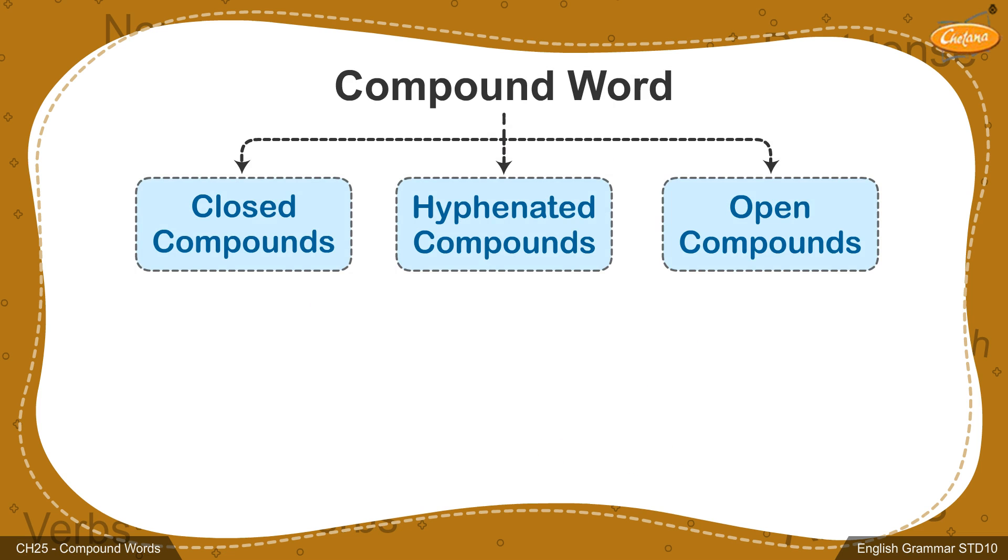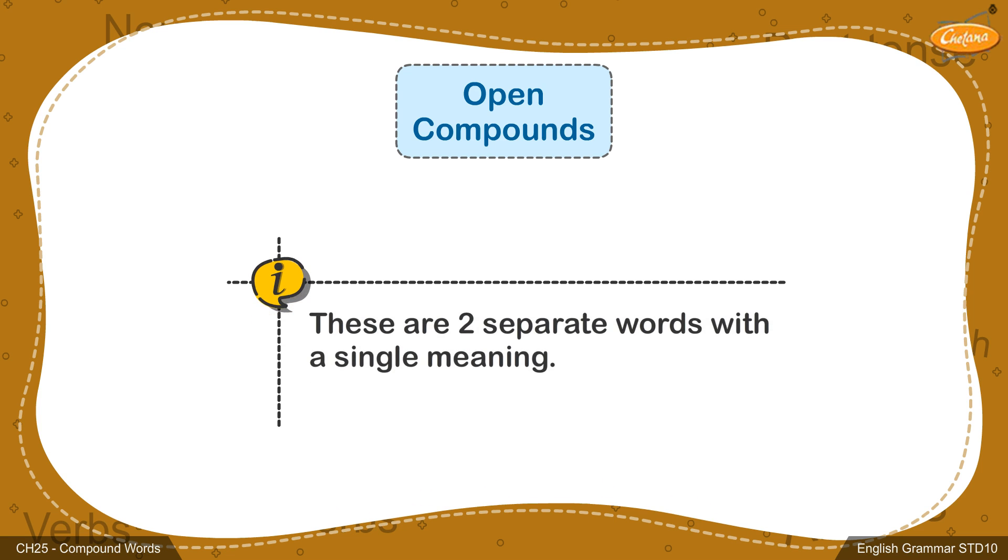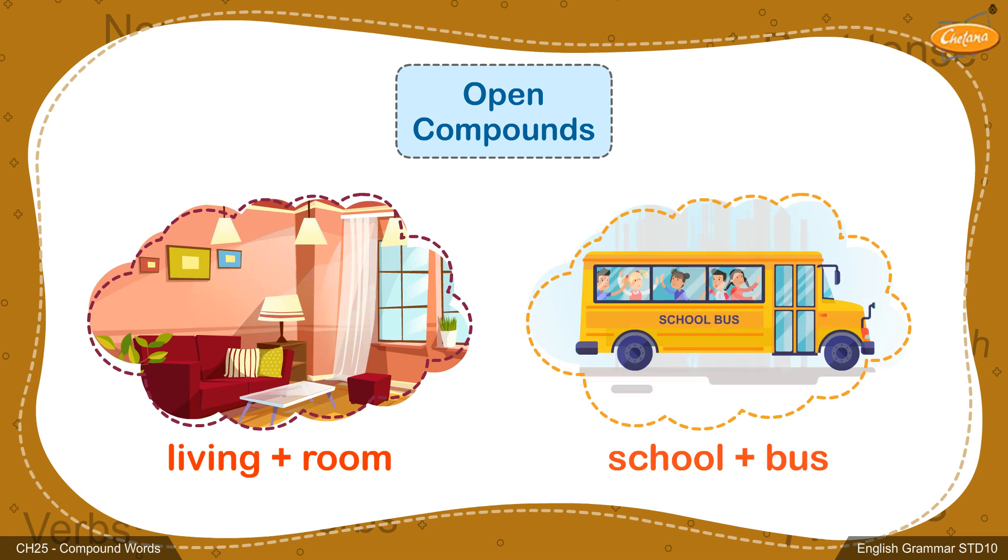The third type of compound is called an open compound. Open compounds are spelled by two different words. However, function as a single unit of meaning. For example, living room or a school bus.